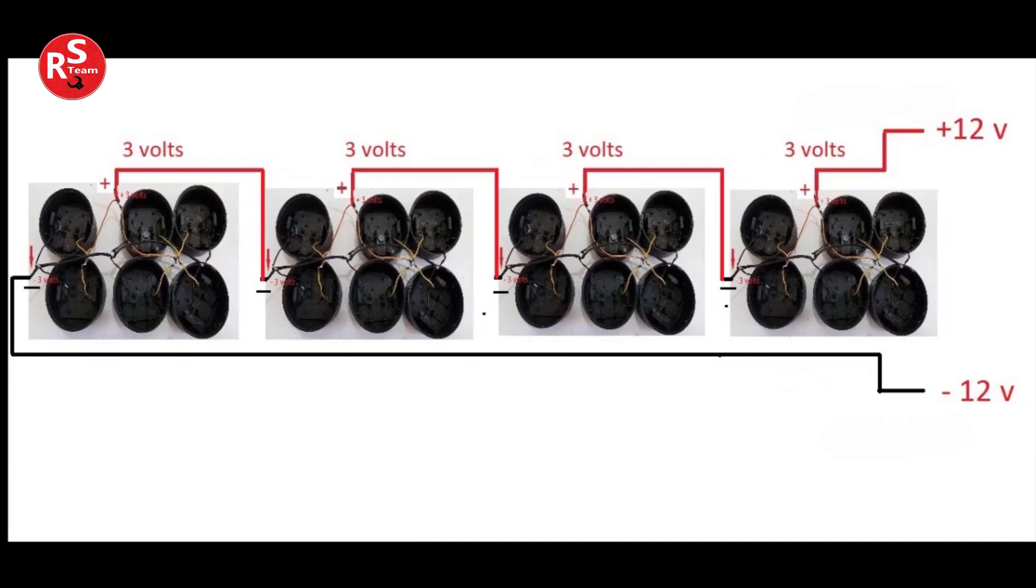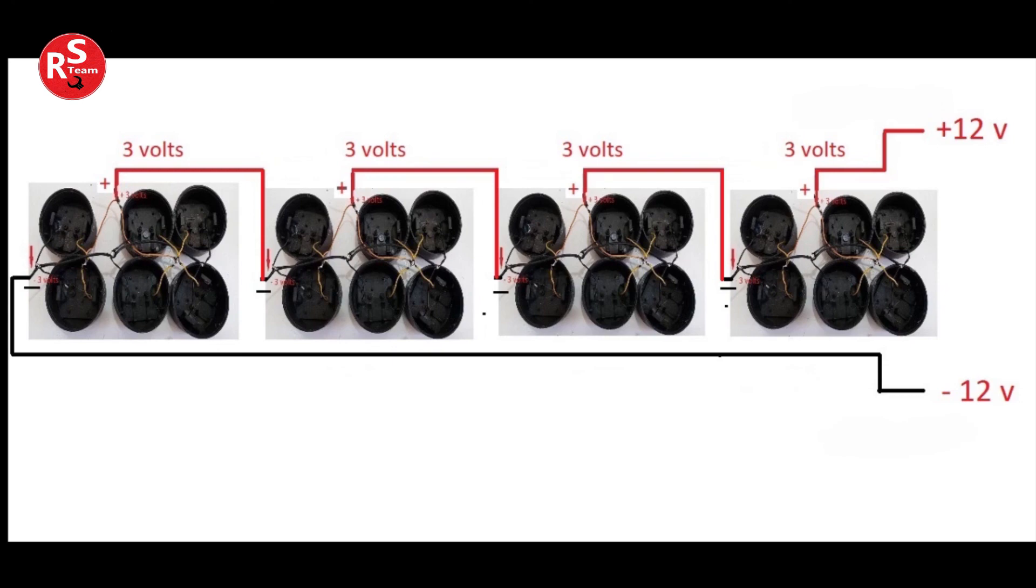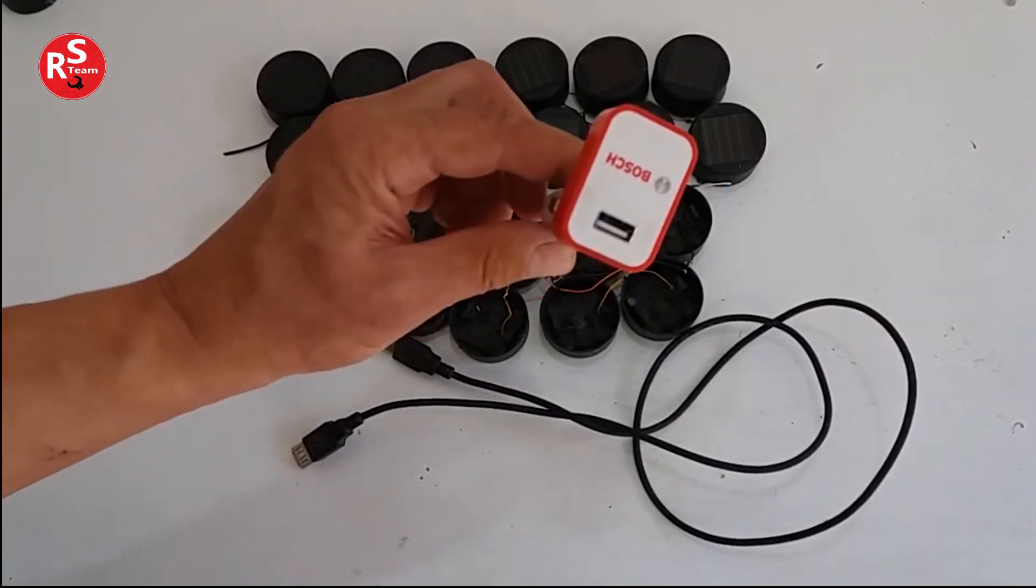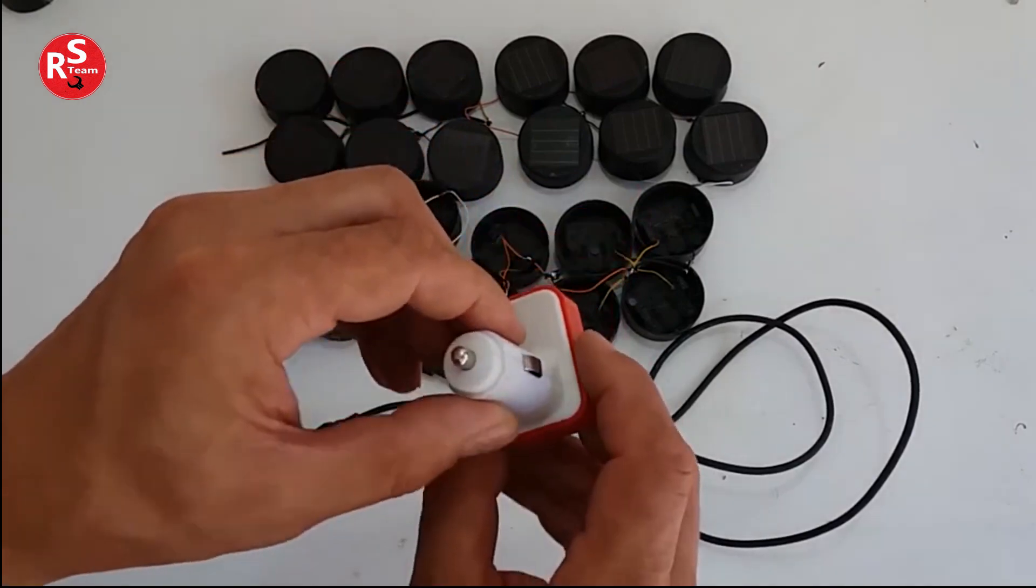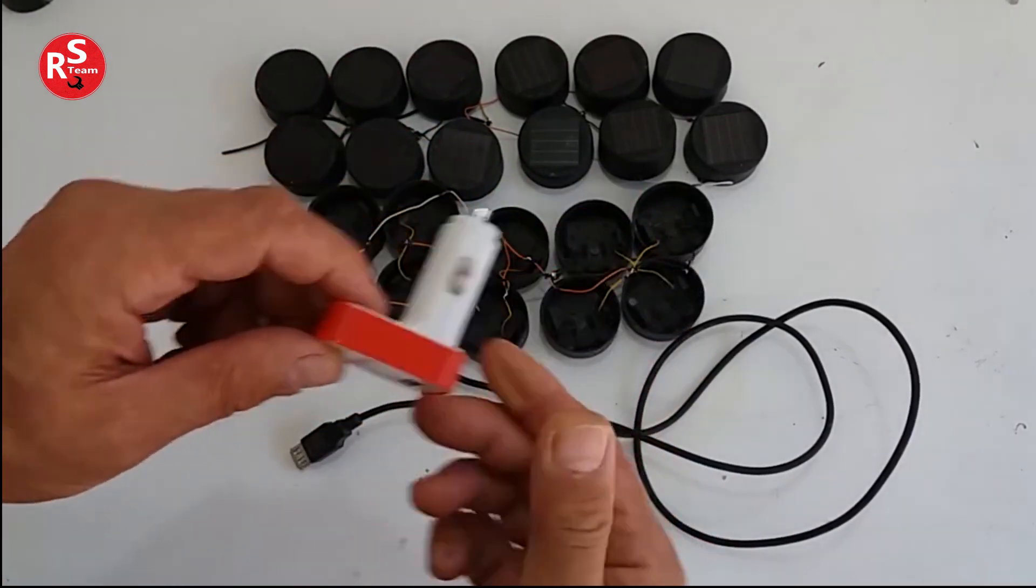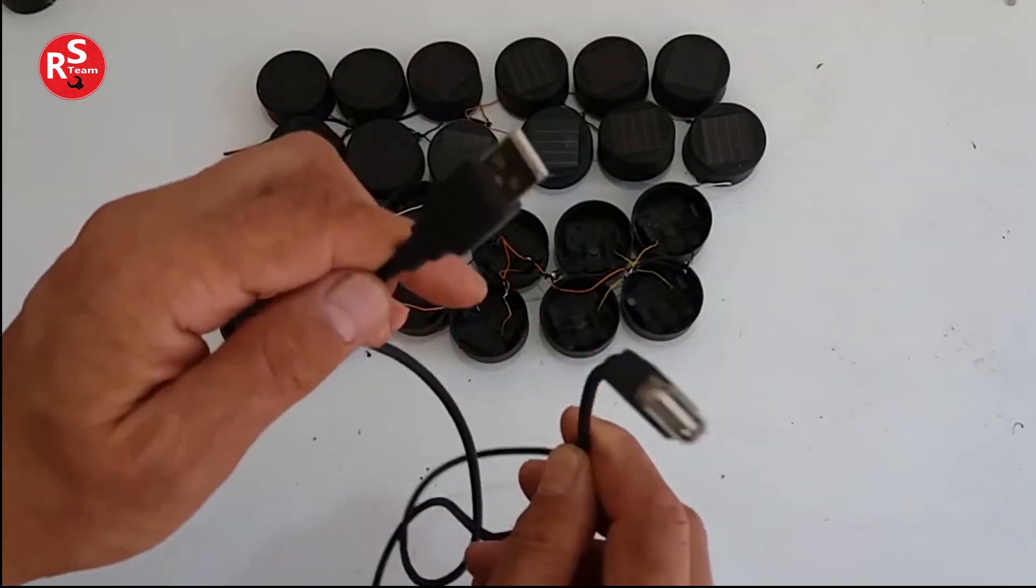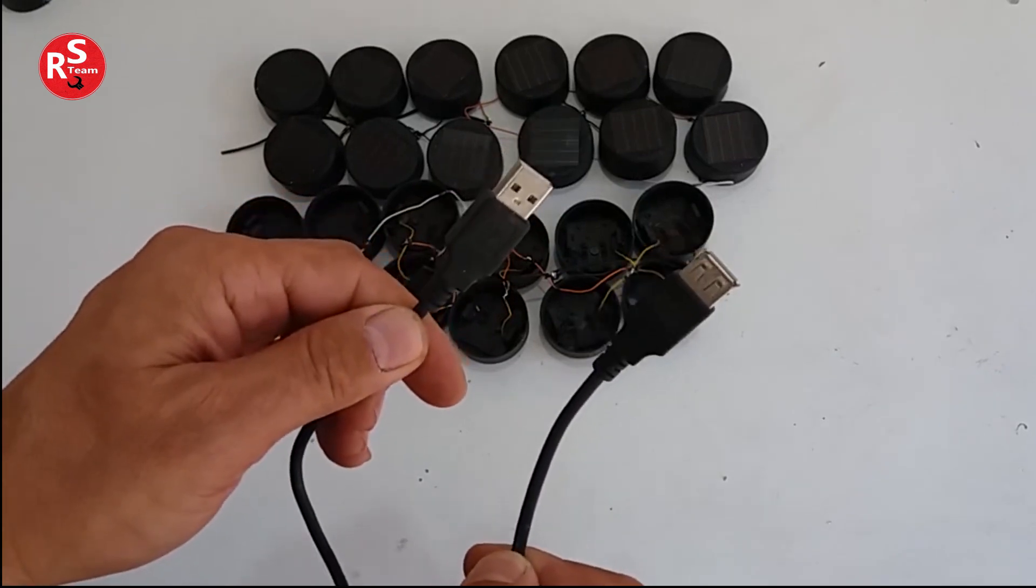Then, the 4 groups are connected in series, and the voltage is increased to 12 volts. We will use a car charger for a smartphone, which will convert the voltage from 12 volts to the appropriate voltage for charging the smartphone.